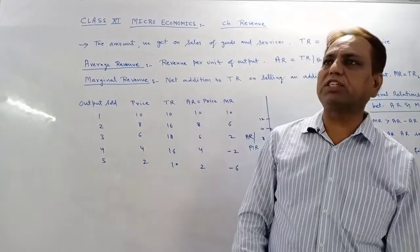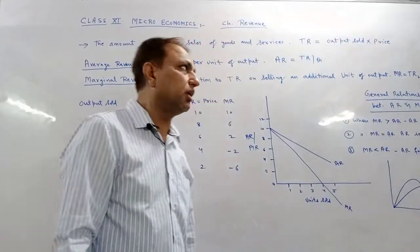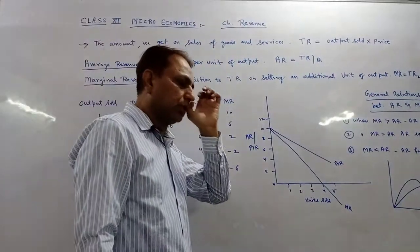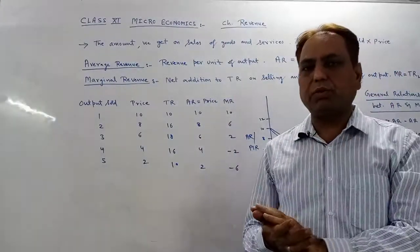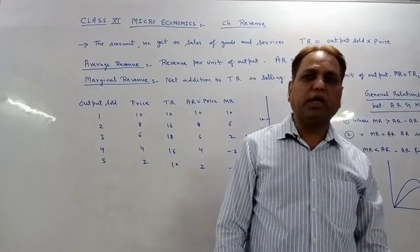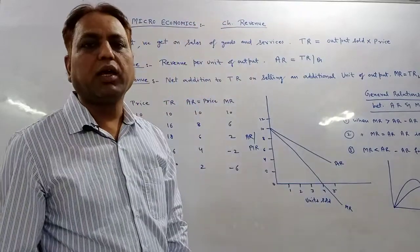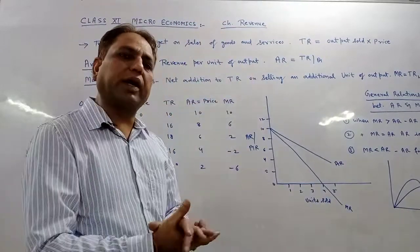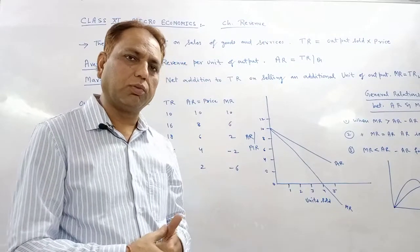Now connected with that, our next chapter is Revenue. Cost is one side, and the other aspect is revenue. Any producer incurs cost, manufactures a product, and then when he sells it in the market, what he receives — that is revenue.